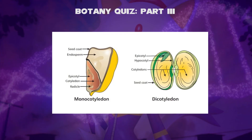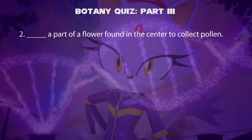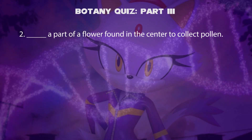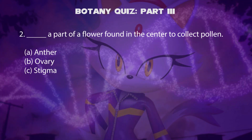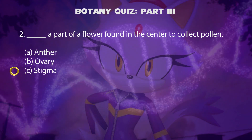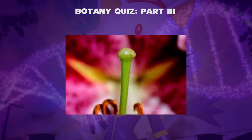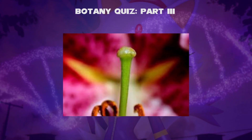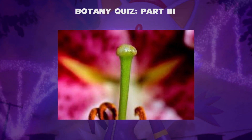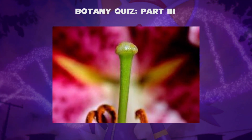Monocot and dicot seeds. Second question, fill in the blank: a part of a flower found in the center to collect pollen — is it anther, ovary, or stigma? The answer is stigma. The stigma is part of the female reproductive system of a flower. It is on top of the style and is the apex of the reproductive system. It is waxy or sticky to collect dry pollen, which is blown by wind or transferred by insects.